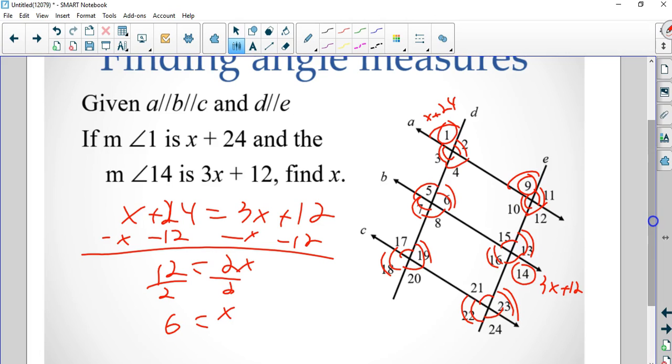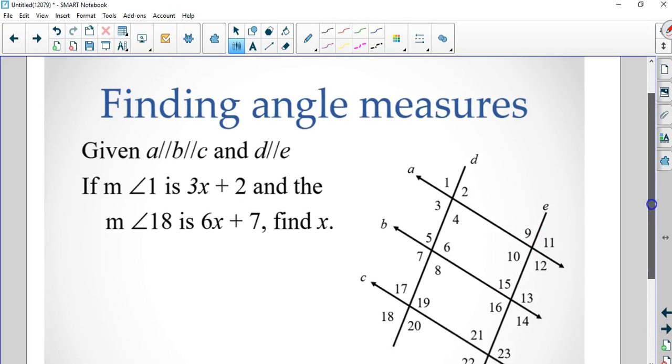Now it just says find the measure of angle. If it did, all I'm going to do is plug in 6. 6 plus 24 is 30. 6 times 3 is 18 plus 12 is 30. Which means all the acute angles on here are 30, which makes all the obtuse angles on here 150 degrees.